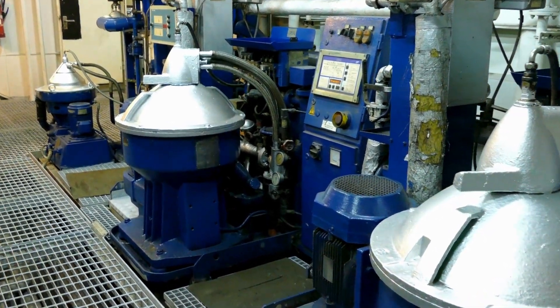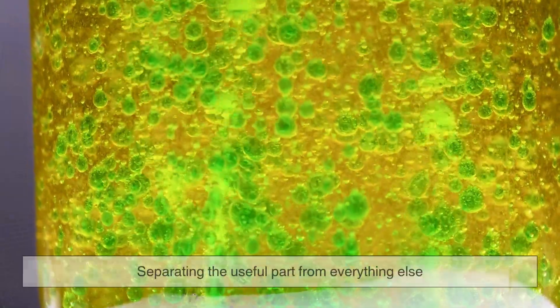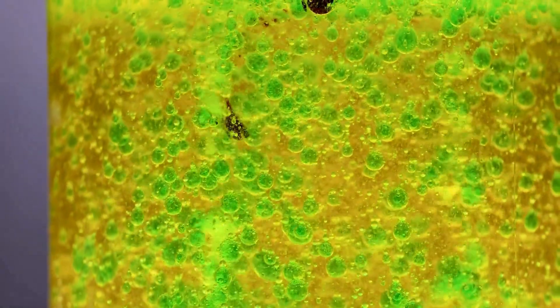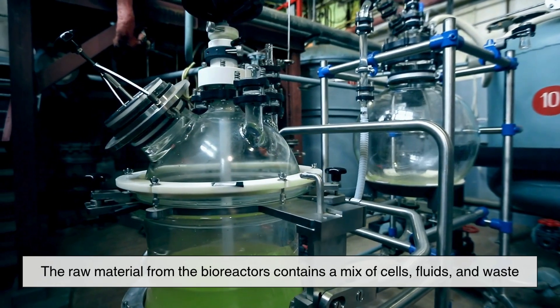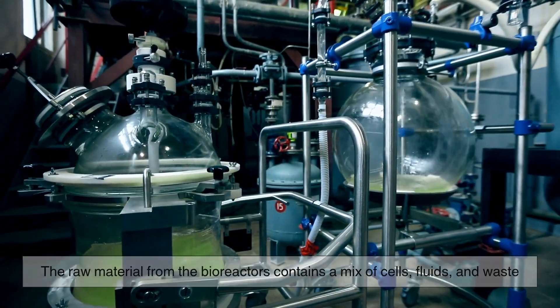Once enough of the ingredient is grown, the next step is to purify it. That means separating the useful part from everything else. The raw material from the bioreactors contains a mix of things: cells, fluids, and waste.